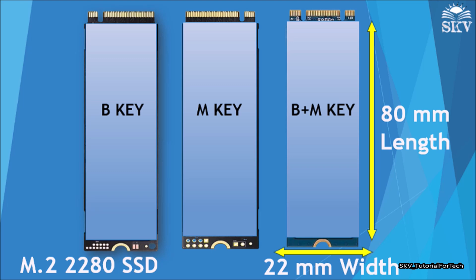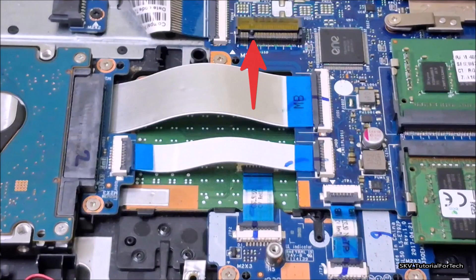In my case, I have a B-keyed M.2 slot like this. Typically, it supports 2280 size SATA SSD connections, so make sure to check the size of the SATA SSD.